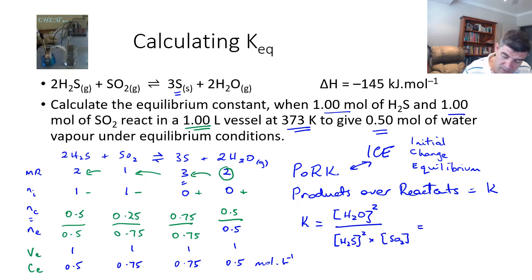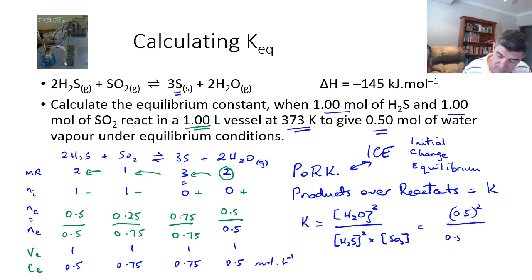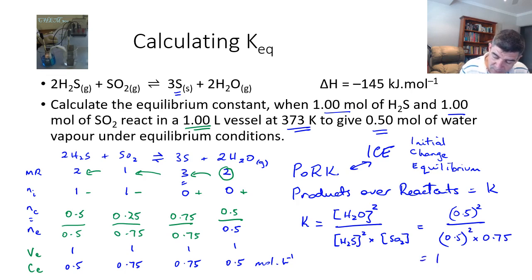Substituting the values in: water is 0.5 squared, divided by H₂S at 0.5 squared multiplied by SO₂ at 0.75. This gives a value of 1.33, which is our equilibrium constant.